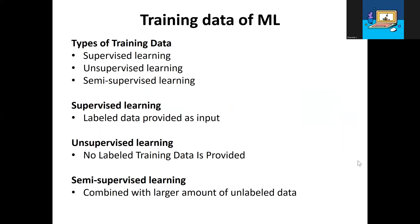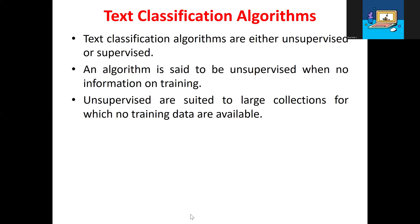In the training data of machine learning, there are three different learning approaches. One is supervised learning, another one is unsupervised learning, and the third one is semi-supervised learning. In supervised learning, labeled data is provided as input — only labeled data, that is called supervised learning. Unsupervised means not labeled; no labeled training data is provided. These are the two differences between labeled and unlabeled data.